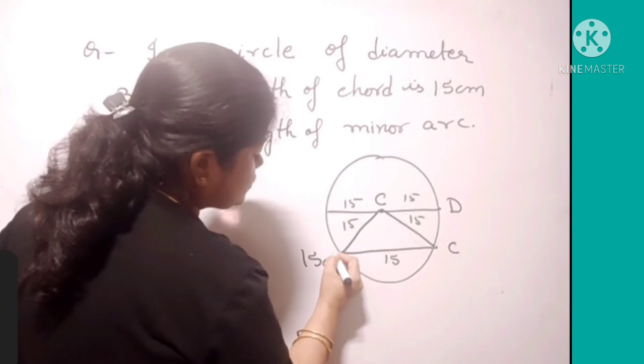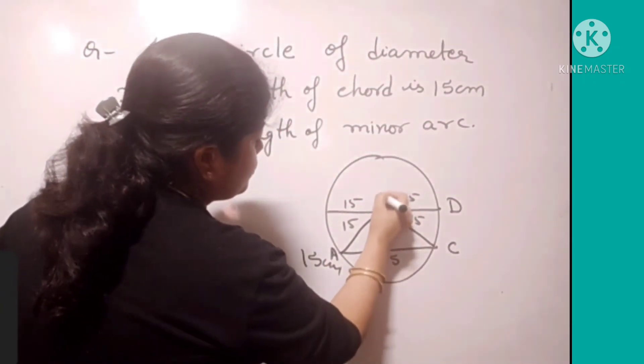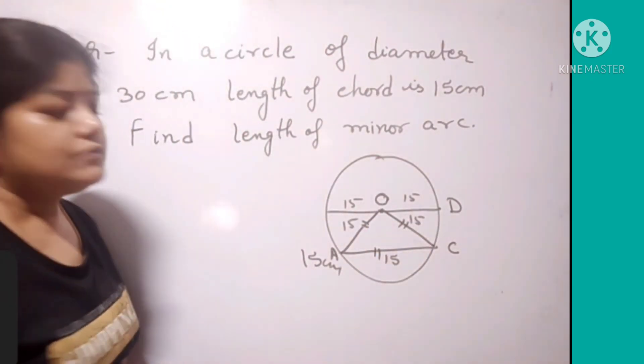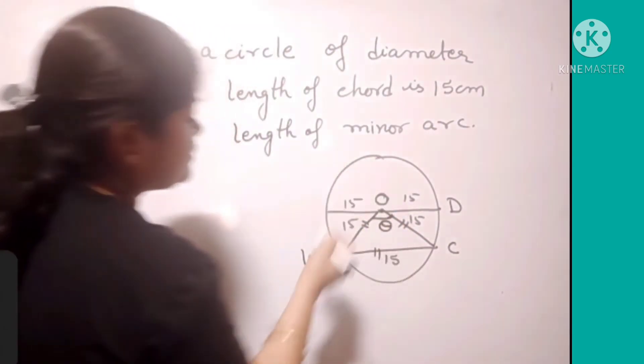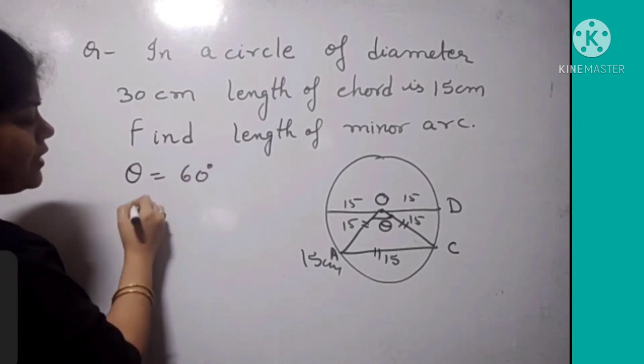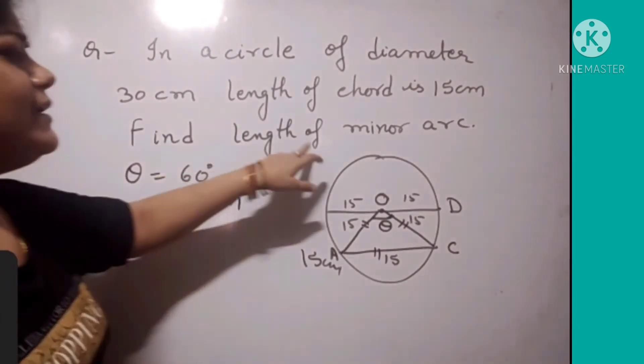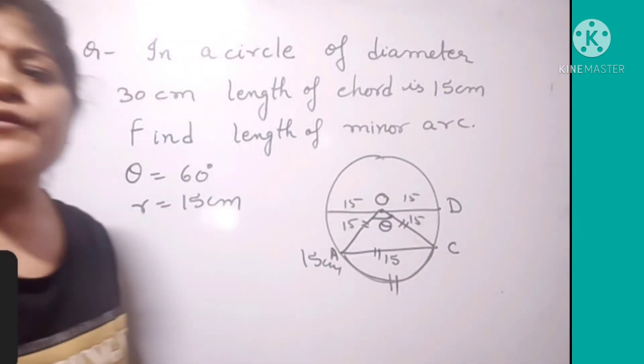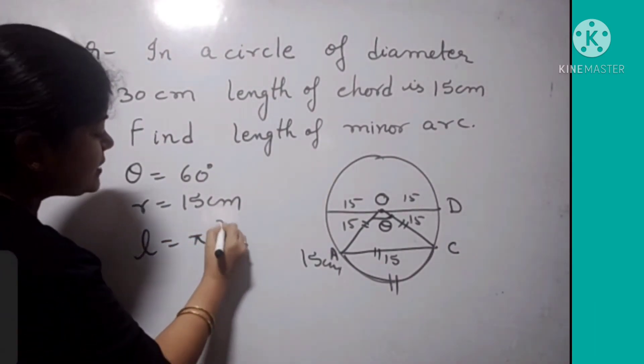So in this way, the triangle which is over here - A, C and O - becomes an equilateral triangle because all three sides are equal. So the angle at the center is 60 degrees. Theta is 60 degrees, and radius is 15 cm. Find the length of minor arc. We have to find this length, so we use the same formula.